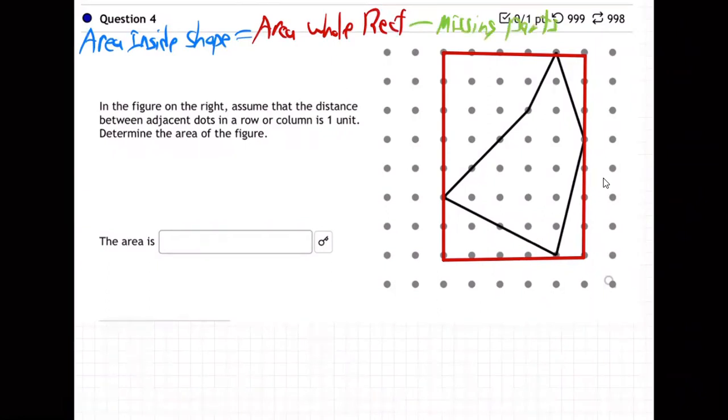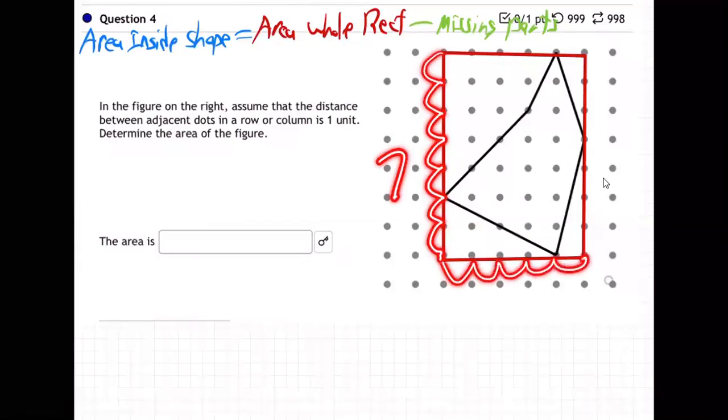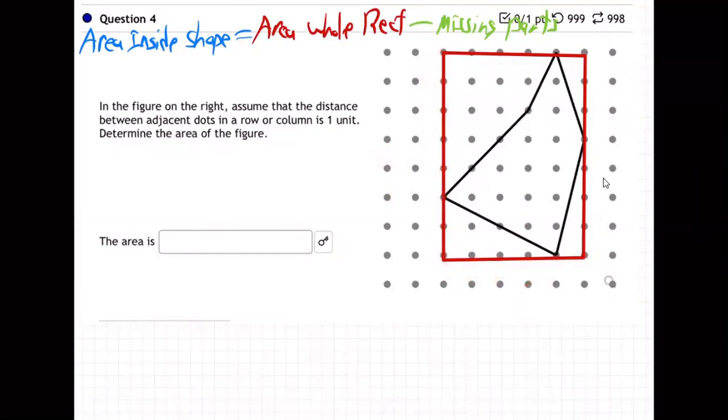The area of the inside shape, that strange inside shape, is going to be the whole rectangle subtract the missing parts. So what's the whole rectangle? Well, the whole rectangle is one, two, three, four, five, six, seven. Remember, you count jumps, not dots. So it's seven jumps, and one, two, three, four, five. Five jumps. So seven jumps by five jumps. Seven jumps tall, five jumps wide.